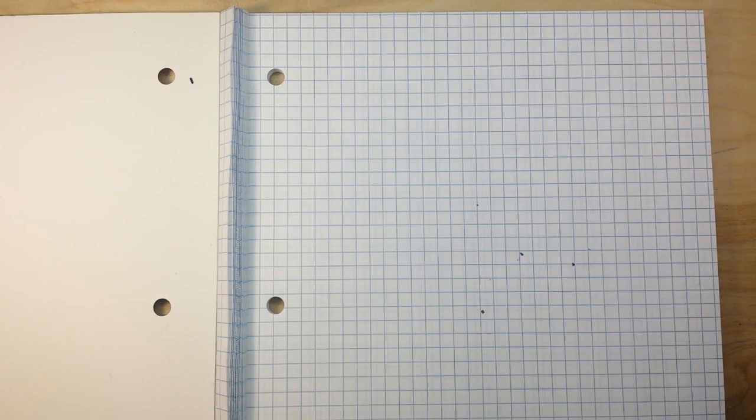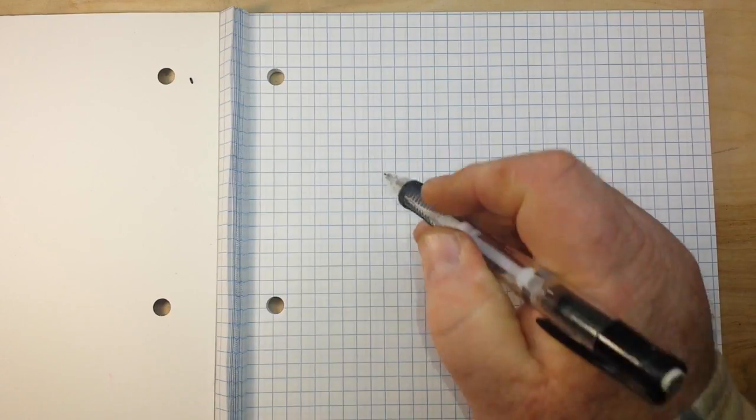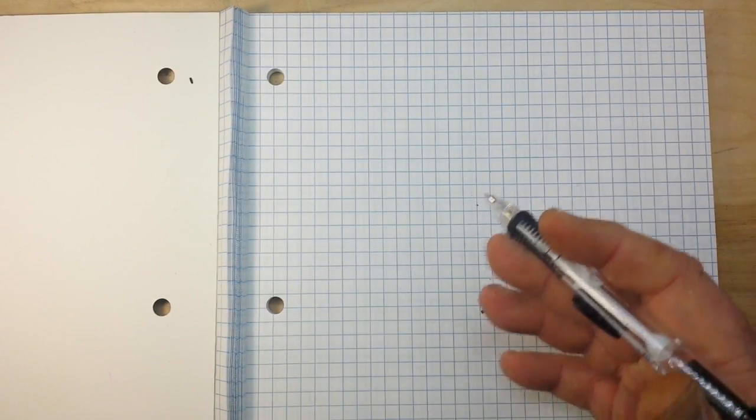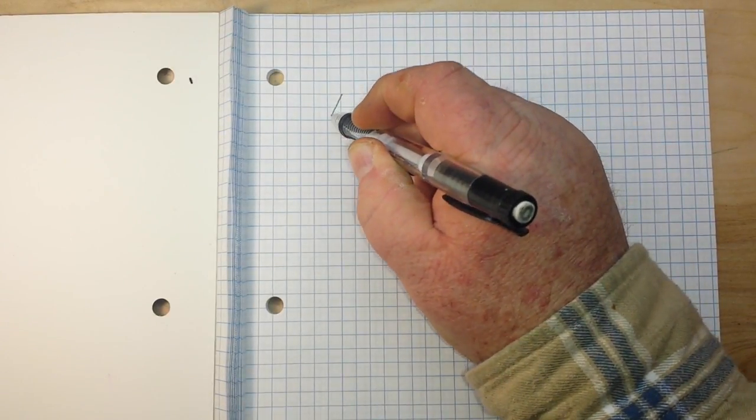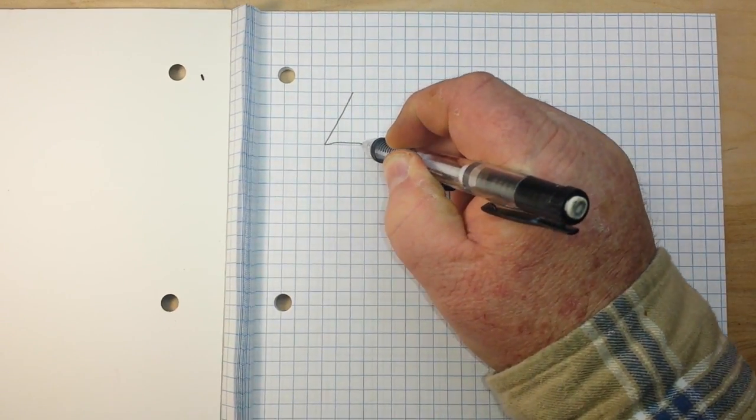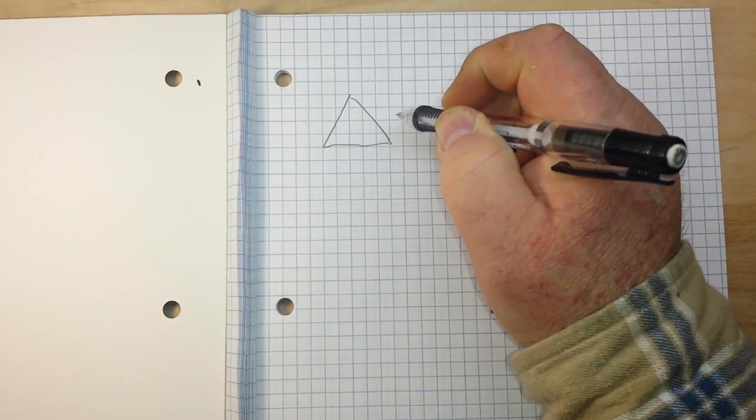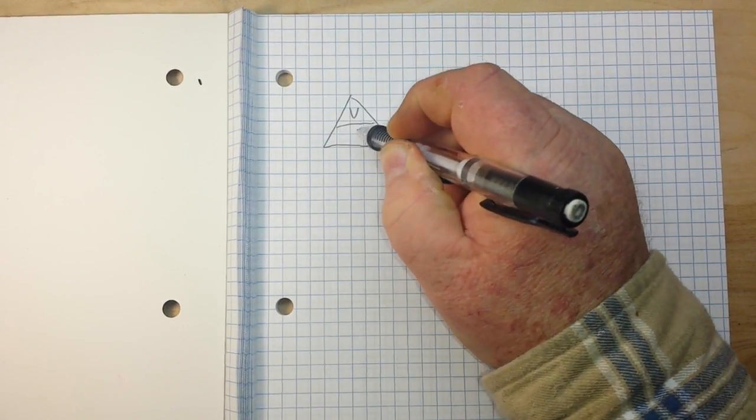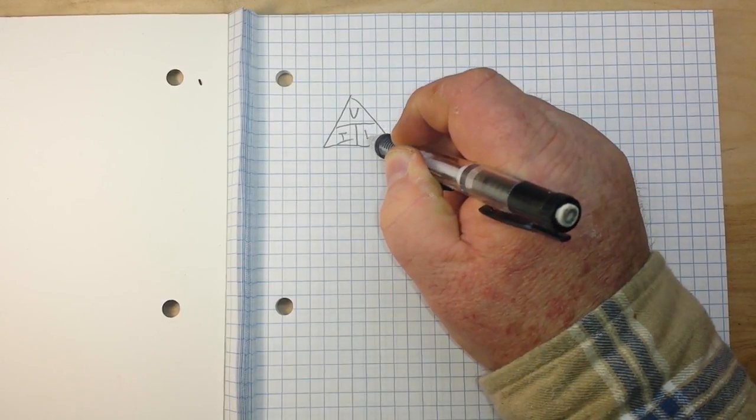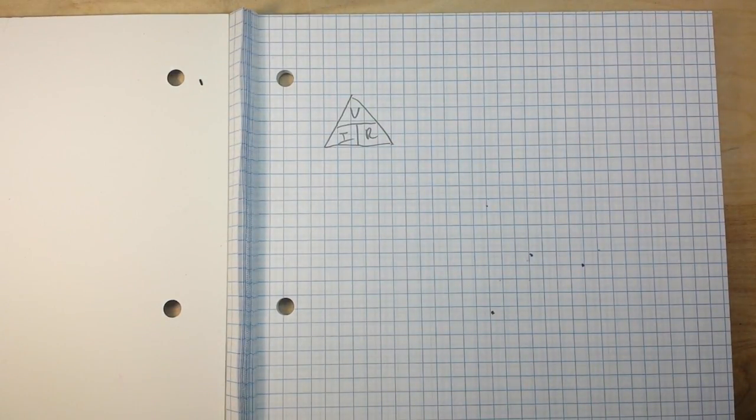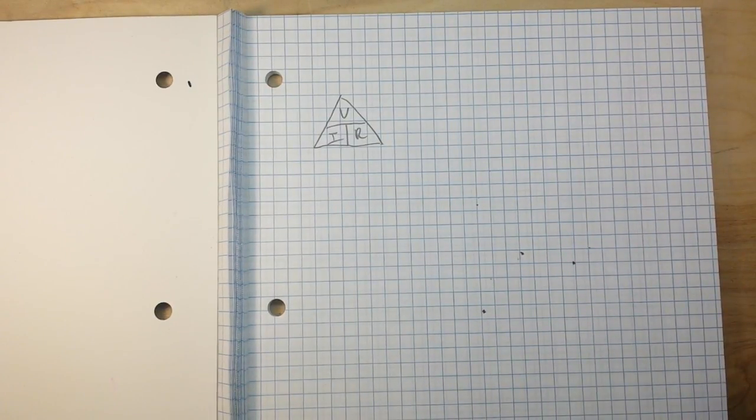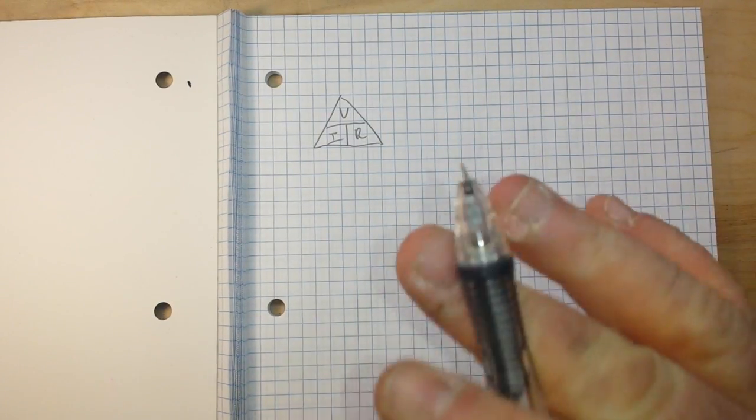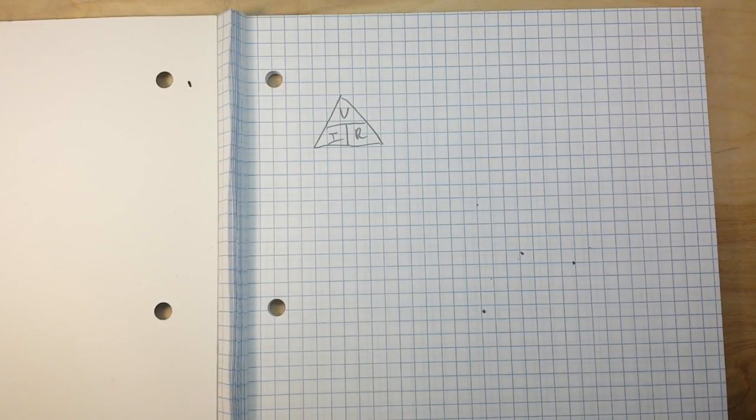What we're going to talk about is basically current divider circuits. So there are three things that you need to know starting today, and these are what are covered in lessons one and two. The first one is, of course, Ohm's law. There's our Ohm's law triangle: V equals I over R, or I times R. That's the building block, that is the keystone to electrical engineering. If you don't grasp that, you're not going to make it through the class.